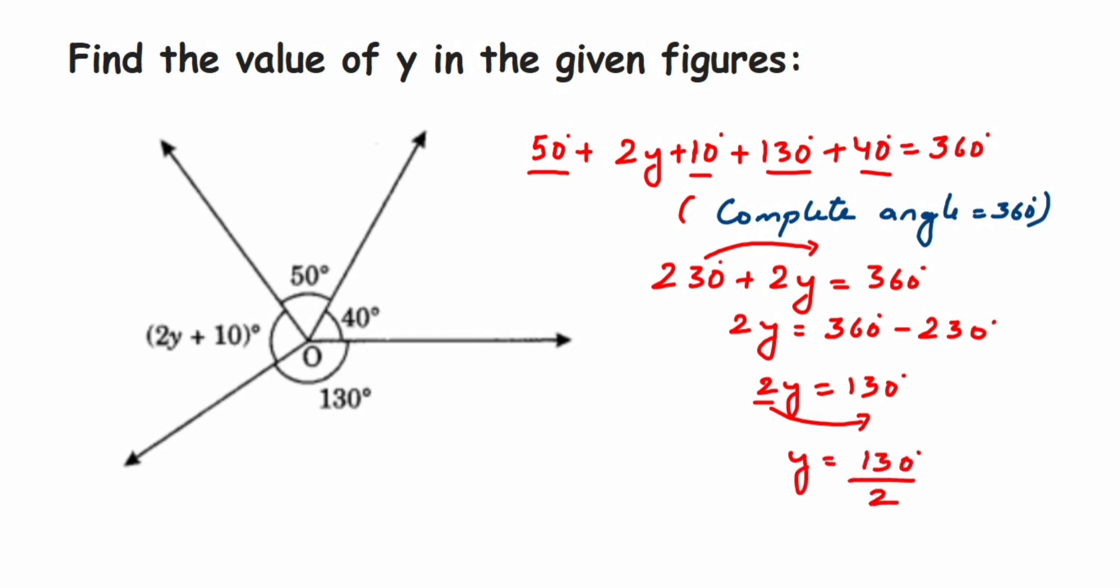Now cancel this. 2 ones are 2, 2 sixes are 12 with 1 as the remainder, so that makes 10. Then 2 fives are 10. So therefore y value will be equal to 65 degrees.